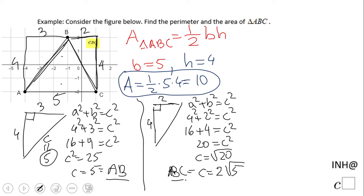And now we can find the perimeter. The perimeter is on the sides, right? So we have the other side. The perimeter is AB plus BC plus AC.